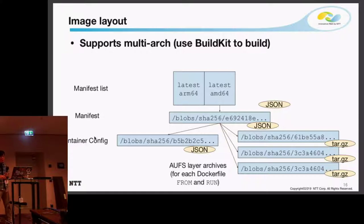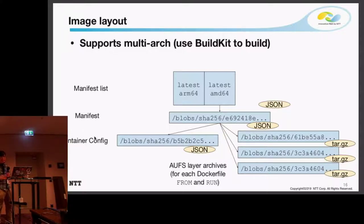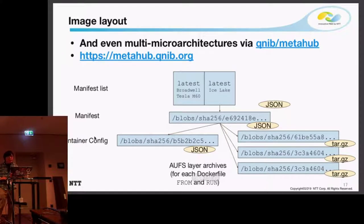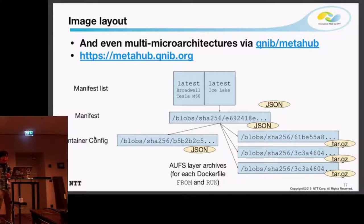With BuildKit, you can choose either QEMU or real remote machines for building manifests for other architectures. And with Christian's MetaHub, you can also put information for microarchitectures such as Broadwell or Haswell, and also GPU architectures such as Tesla M60.